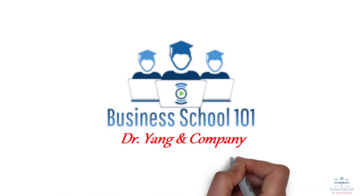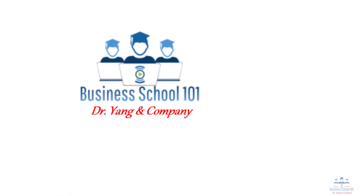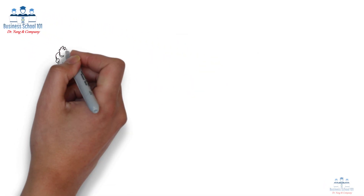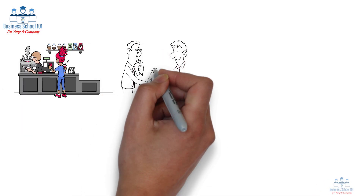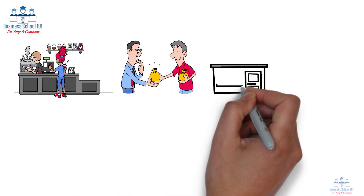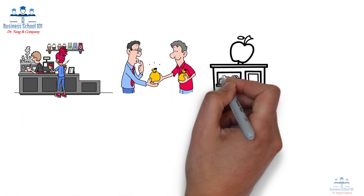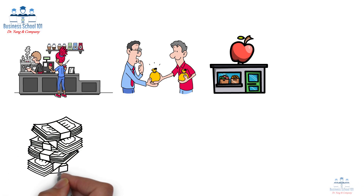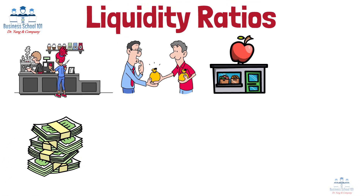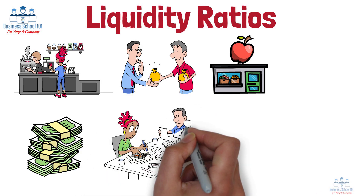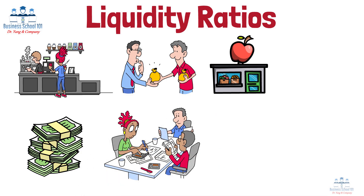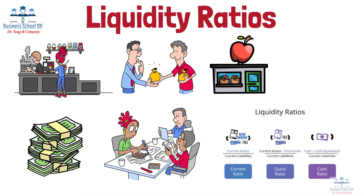Hello everyone, welcome to Business School 101. Picture a local coffee shop trying to pay its suppliers at the end of the month, or a small grocery store ensuring it has enough cash to cover rent and payroll. These real-world scenarios highlight a crucial question: can a business meet its short-term financial obligations? This is where liquidity ratios come into play.